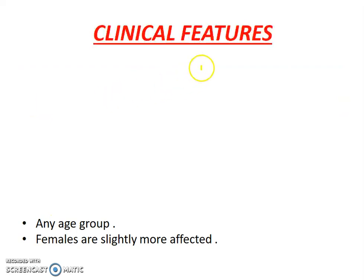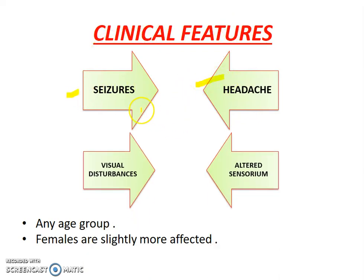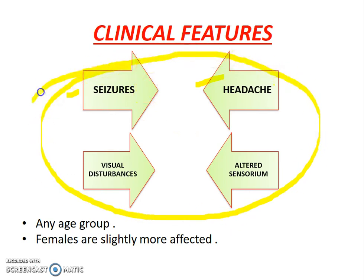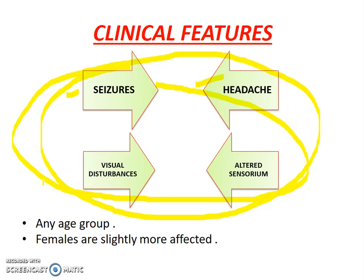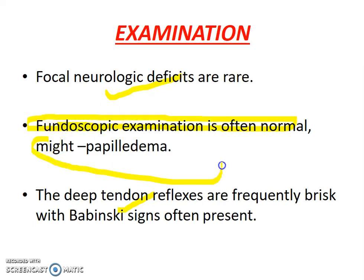Coming to the clinical features, the patient usually presents with seizure, headache, visual disturbance, and altered sensorium. These four are the cardinal manifestations of PRES. Any age group might be affected, from an infant to over 70 years, with the common age group being 40–50. Females are slightly more affected than males. Focal neurological deficits are usually absent. Deep tendon reflexes might be brisk and plantar might be extensor. Fundus examination reveals normal findings unless the patient has eclampsia, which might lead to papilledema.